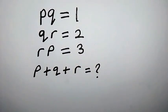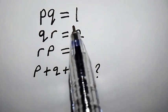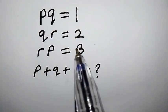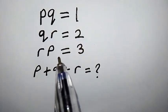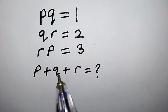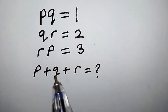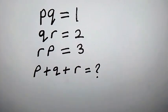Hello, welcome back. PQ equals 1, QR equals 2, RP equals 3. How do we find the value of P plus Q plus R?